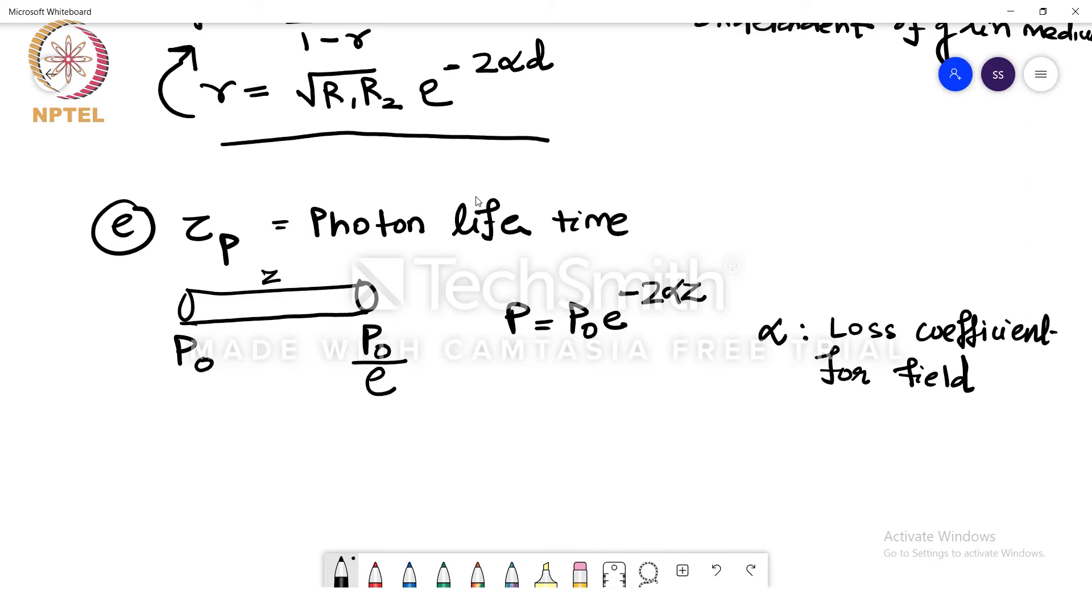So alpha is loss coefficient for field. So for this condition to be true, z has to be equal to 1 by 2 alpha for it to be p0 by e at the end of the medium. So which means that we know that time is the ratio of distance divided by velocity, which means z we substitute it by 1 by 2 alpha divided by the velocity, the group velocity which is equal to phase velocity.